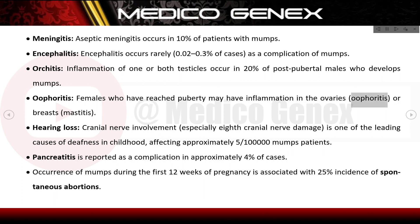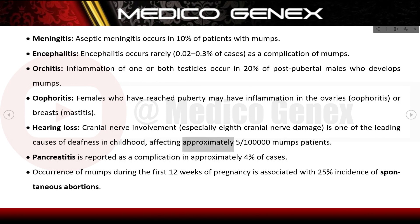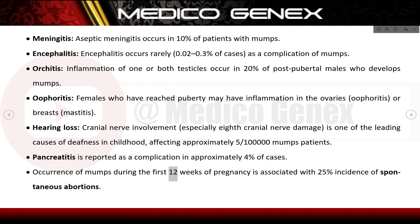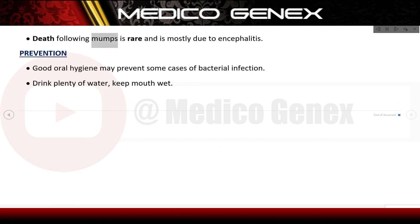Additional complications include hearing loss due to cranial nerve involvement, especially eighth cranial nerve damage, which is one of the leading causes of deafness in childhood, affecting approximately 1 in 20,000 mumps patients. Pancreatitis is reported in approximately 4% of cases. Mumps during the first 12 weeks of pregnancy is associated with a 25% incidence of spontaneous abortion. Death following mumps is rare and mostly due to encephalitis.